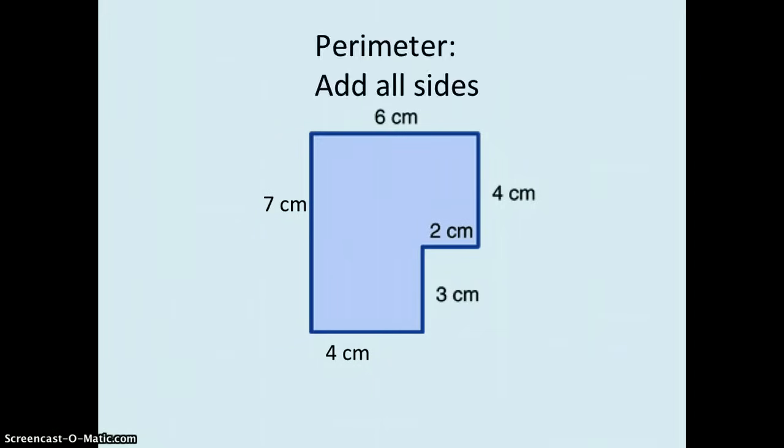To get the perimeter, we do the same thing that we do for a rectangle or a square. We just add up all the sides. The difference is that instead of four sides, we have more.